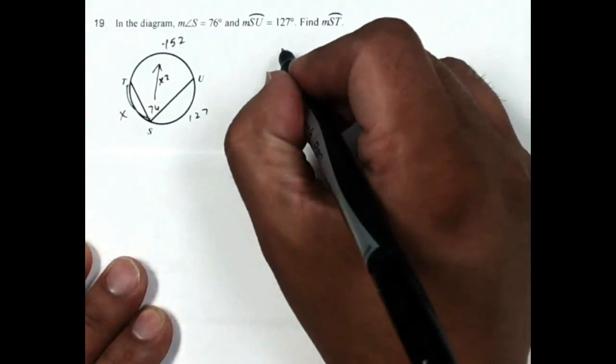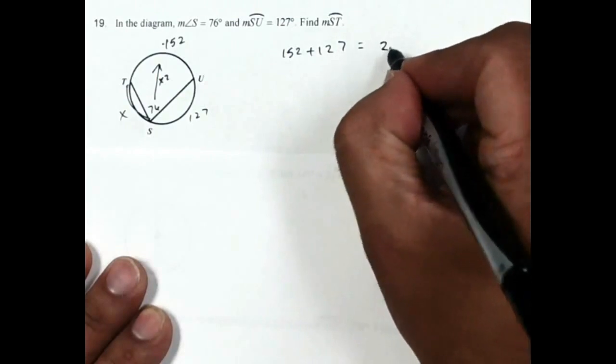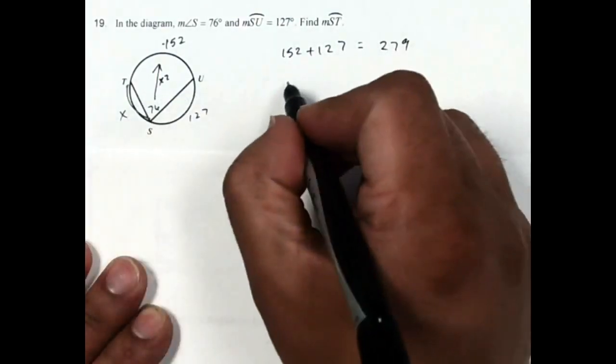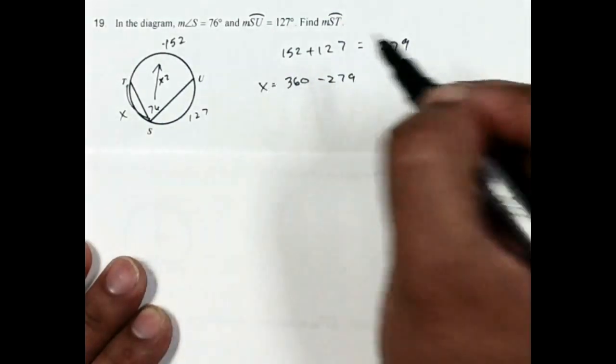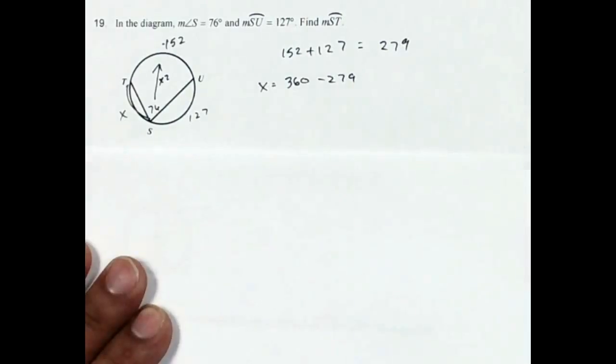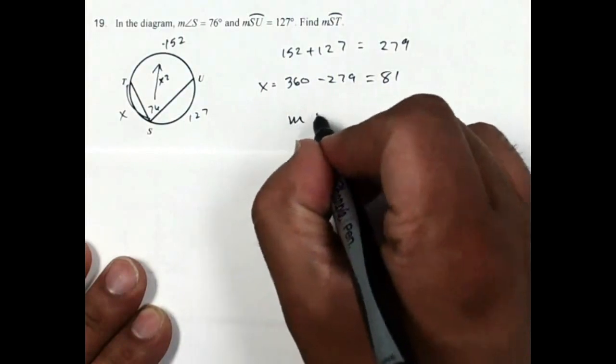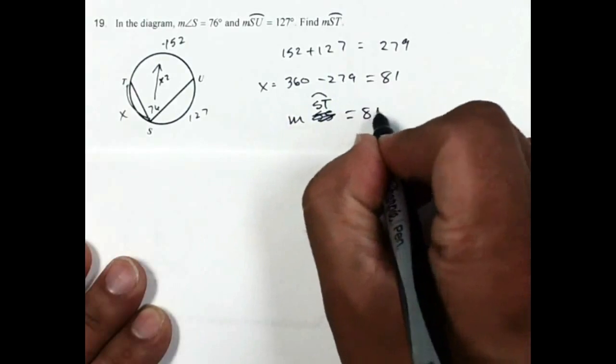All the way around the circle is 360. So if I take 152 plus 127, that gives me 279. And then so x is going to equal to 360 minus 279, which is going to come out to be 81. So the measure of arc ST is 81 degrees.